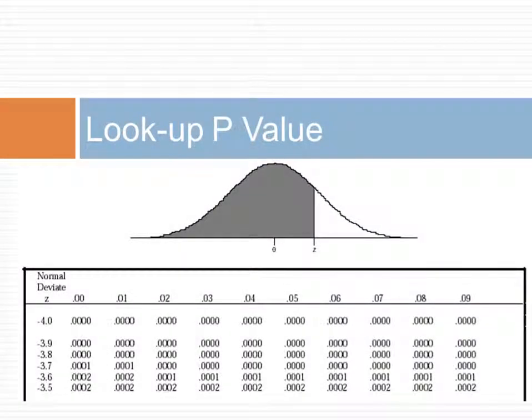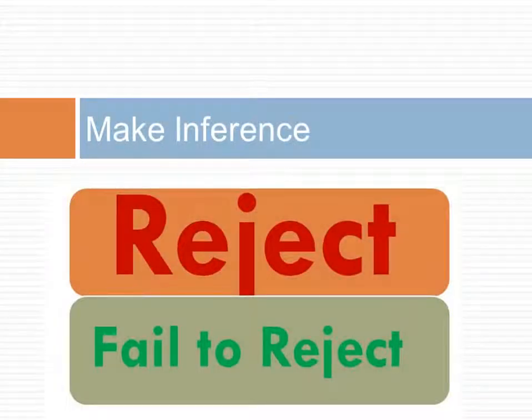The next step in our inference framework is to look up the p-value. As before, we look up the p-value associated with the standard distribution of z. Keep in mind that these tables provide one-sided tests, and the p-value for a two-sided test is double the p-value for a one-sided test. We reject the null hypothesis if the p-value is smaller than the significance value.